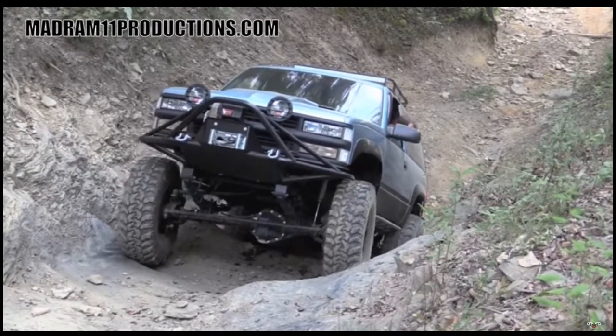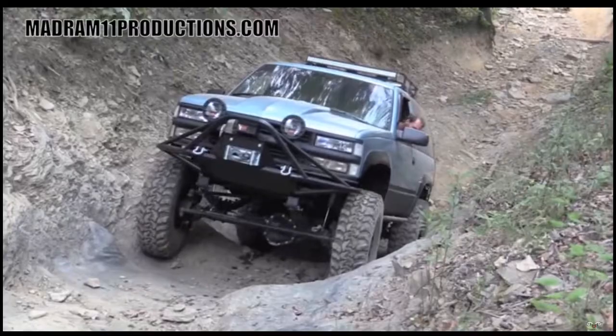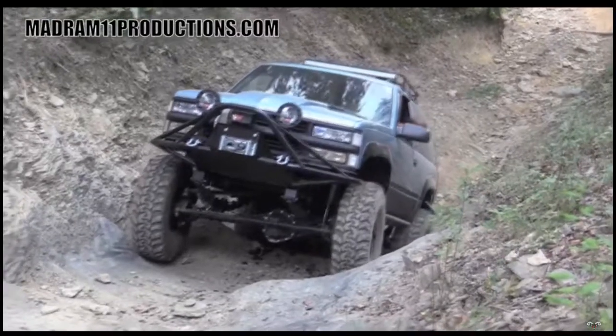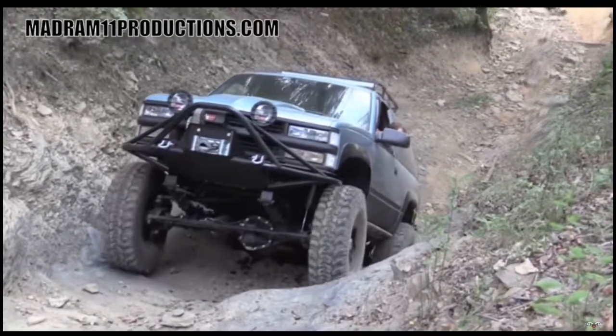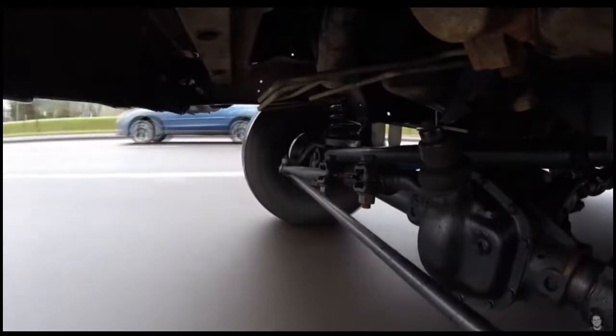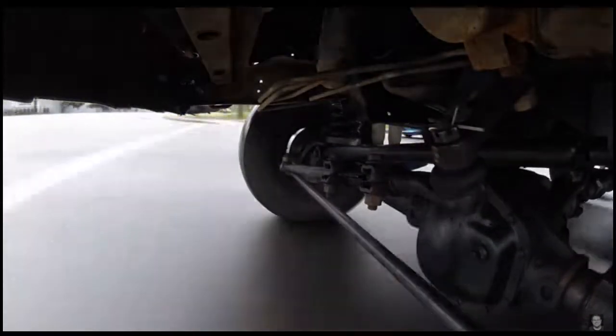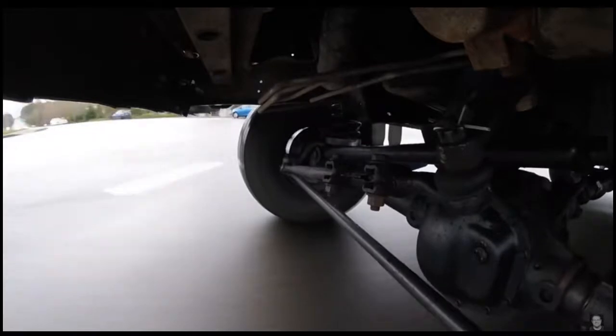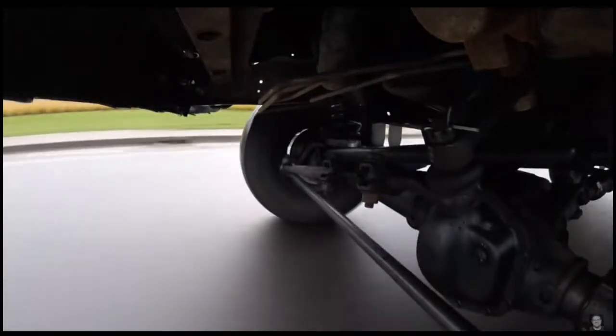Here we have a live axle suspension where we can see the front wheels are connected by a beam. They move up and down together. A road car with live axle suspension. We can see the differential in the middle and when one wheel bounces up and down the other one is also connected.